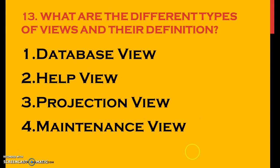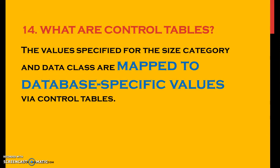So what are the different types of views and their definitions? We have four different types of views: database view, help view, projection view, and maintenance view. What are control tables? The values specified for the size category and data class are mapped to database-specific values via control tables.